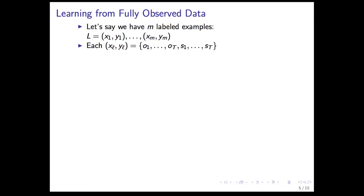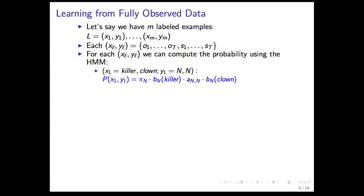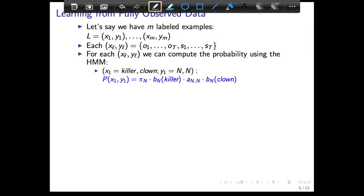Let's say we have m labeled examples — in our case m equals six. For each example we call it x sub l, y sub l: an observation sequence and a state sequence. For any x-y pair we can compute the probability using the HMM. For example, if x1 is 'killer clown' and y1 is 'n, n,' we start as a noun, generate 'killer' as a noun, transition from noun to noun, and generate 'clown' as a noun, giving us the sequence n, n.